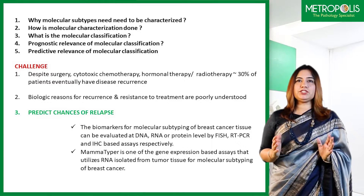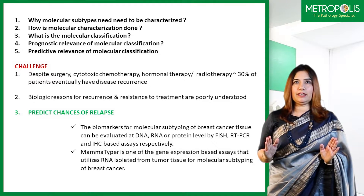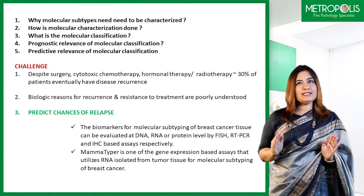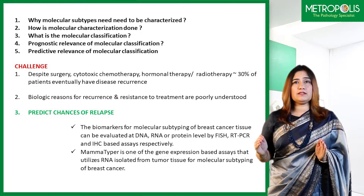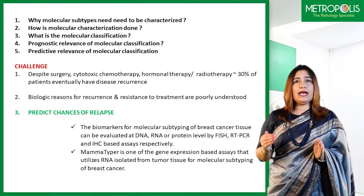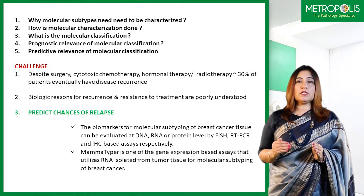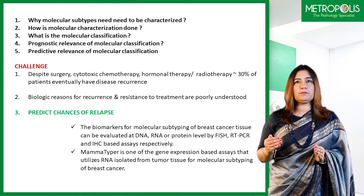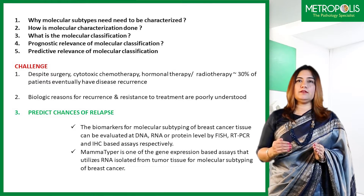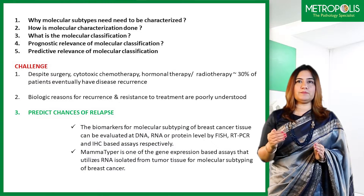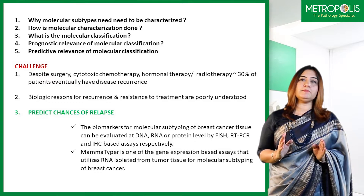The patient gets the best surgery, the best chemotherapy, the best radiotherapy, the best hormonal therapy — and yet, 30% of these patients recur. They have an unfortunate event. We need solid biomarkers. What we use today are surrogate markers — immunohistochemistry, FISH and KISH — to predict the molecular subtype. But what if we can do accurate subtyping by mRNA? And that is what Mammotyper does.